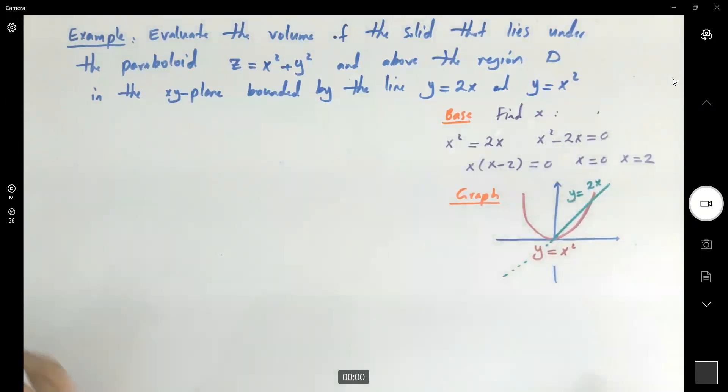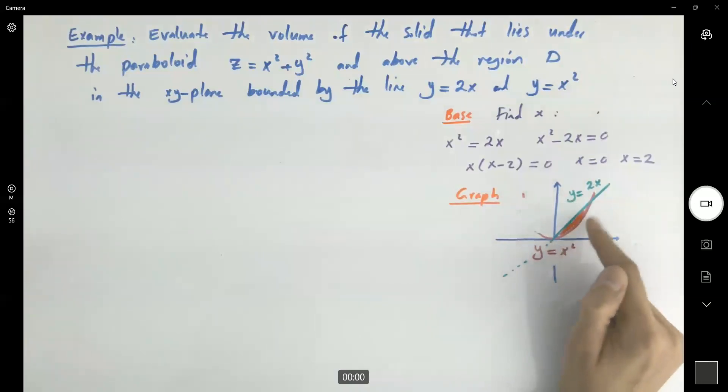This is your base. Your base is just this portion bounded between y equals x squared and y equals 2x. Your x is bounded between 0 and 2, and y from below is bounded by x squared. From above is bounded by 2x. The minimum values are on x squared, the maximum values are on 2x.